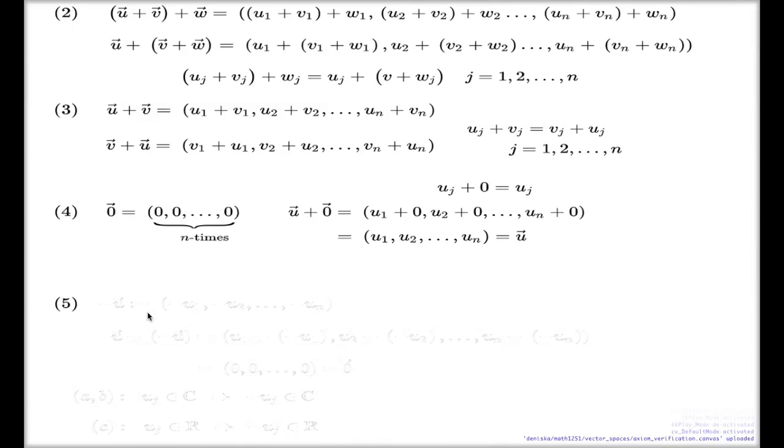Fifth one, it's the existence of the negative. Again, for the negative, we make a very explicit suggestion what the negative could be or will be. We just take the negative of each individual component, and now we verify that this choice of a negative really satisfies the requirement of the axiom of being negative. So we just take the sum of these two elements. We do a complete expansion.